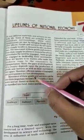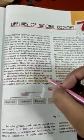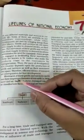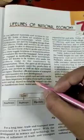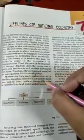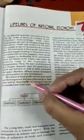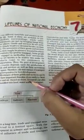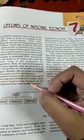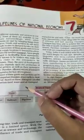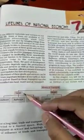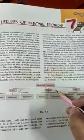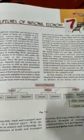The movement of goods and services can be over three important domains of our earth — land, water, and air. So there are mainly three means of transport: land, water, and air.